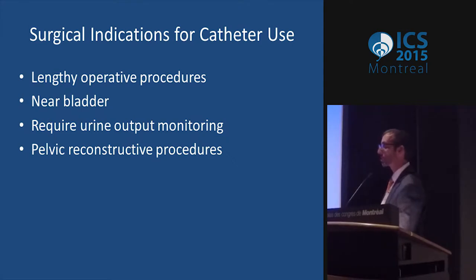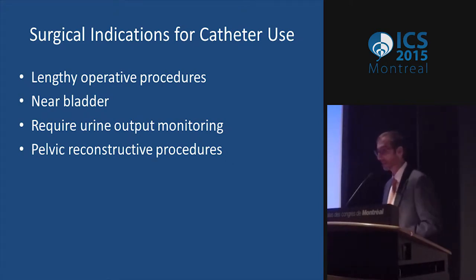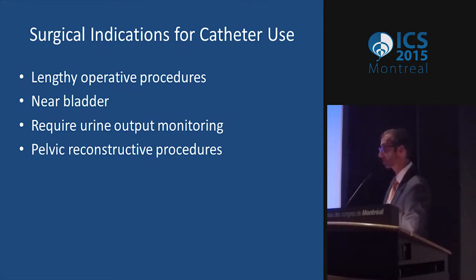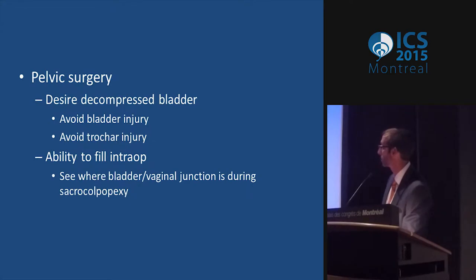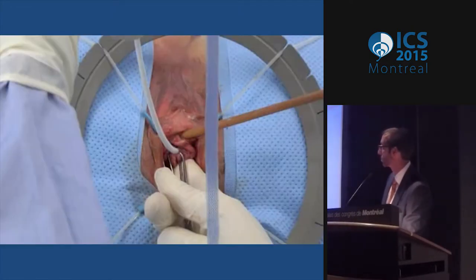Some of the reasons you might want to use a catheter during surgery: if you have a lengthy operative procedure — it could have nothing to do with the GU tract, but just something where the patient's going to be out for 12 hours and you need to drain their bladder. If you're operating near the bladder and need to keep it drained, or sometimes distended so you know where you are. If you need urine output monitoring, or if you're doing a reconstructive procedure in the pelvis.